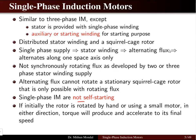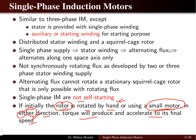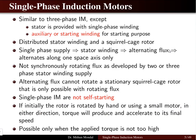If the motor is not self-starting, how can we start the rotor? Initially, the rotor is rotated by hand or by using a small pony motor in either direction — clockwise or anticlockwise — and torque is produced, allowing the rotor to accelerate to its final speed. This operation is possible only when the applied torque is not too high; for very high torque applications, three-phase induction motors are preferred.